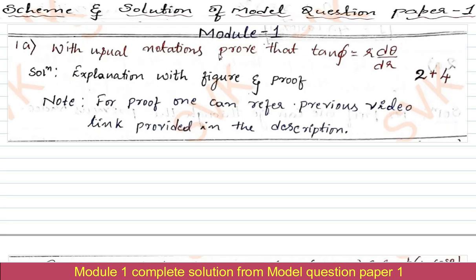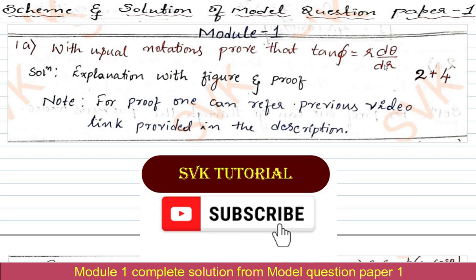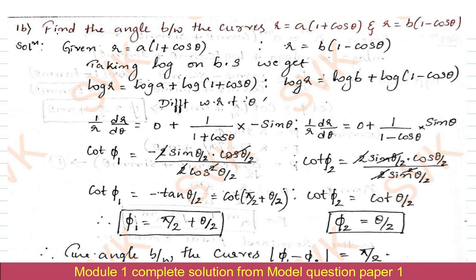Question number 1a: with usual notation, prove that tan φ = r·(dθ/dr). We require to prove that tan φ = r·(dθ/dr). This carries 2 plus 4 marks for the proof. One can refer the previous video; the link has been provided in the description.